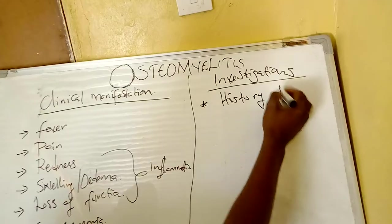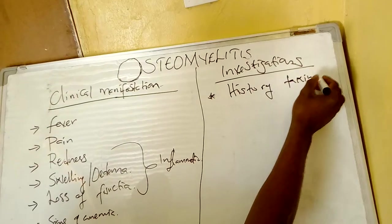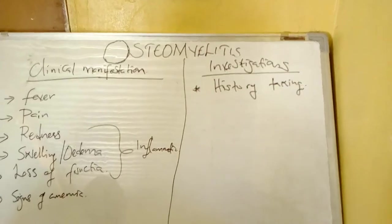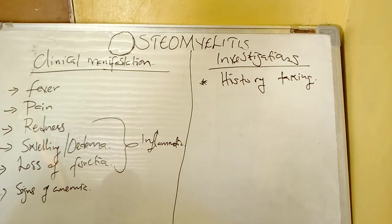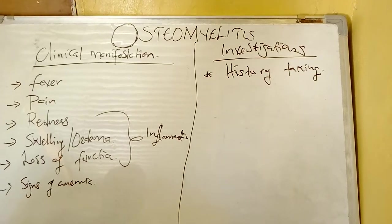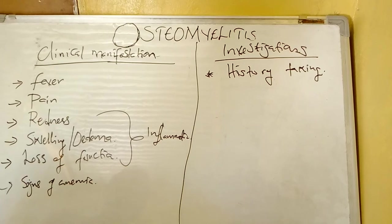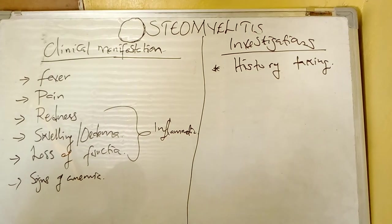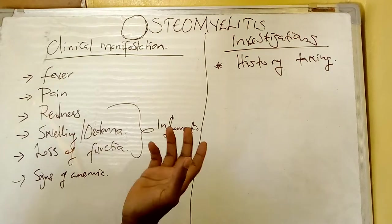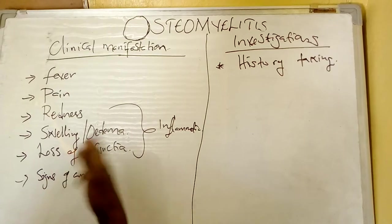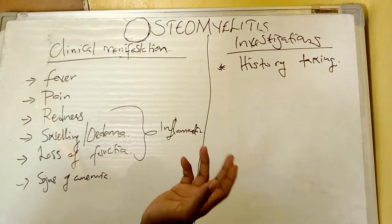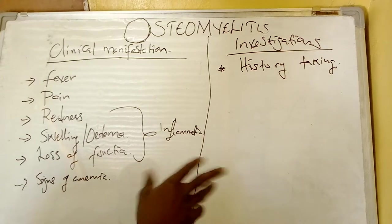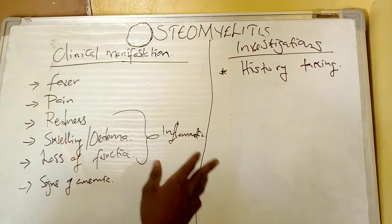We ask whether the patient had a skin infection such as cellulitis, or maybe an open fracture, or if the patient is complaining of bone pain, or if there is edema or redness at the site of the bone. That is the history you are going to get from the patient or relative.